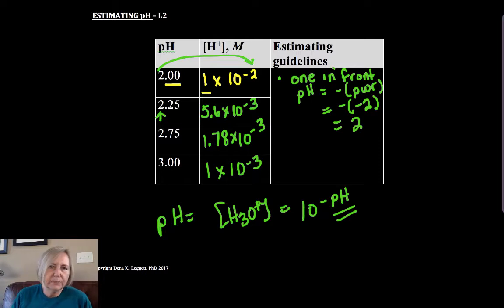And that's the case right here. So if there's a 1 in front, it's pretty straightforward - you should be able to determine the H plus from that or the pH without even estimating.